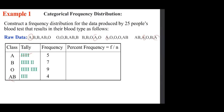This is the frequency distribution table. The tallying really doesn't count — it's just there to help us come up with the answer. The column that matters is the first column and the third column. The first and third columns together give us the frequency distribution table, and you're done.